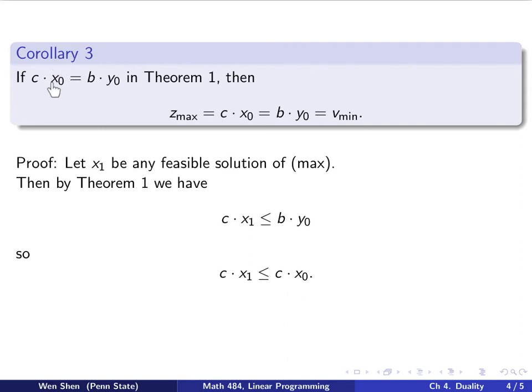Now we use the assumption of our corollary. The corollary says if I have c dot x0 equal to b dot y0, if that holds, then what does this inequality imply? That means this right-hand side here can now be replaced with c dot x0. So we have this inequality would hold for any x1, any feasible solution of the max problem. Any feasible solution, this dot product will be bounded by c times x0, that special one that satisfies this equality. That simply means c dot x0 here would be the maximum value for z.